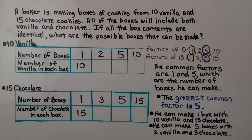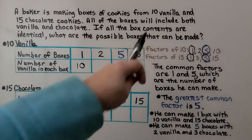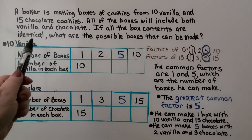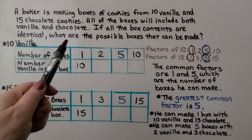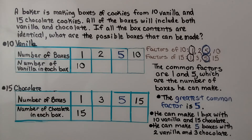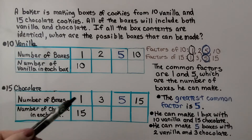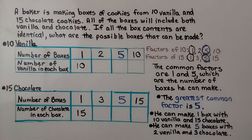A baker is making boxes of cookies from 10 vanilla and 15 chocolate cookies. All of the boxes will include both vanilla and chocolate. If all the box contents are identical, what are the possible boxes that can be made? We have a table showing the number of boxes and the number of vanilla and chocolate cookies in each box.